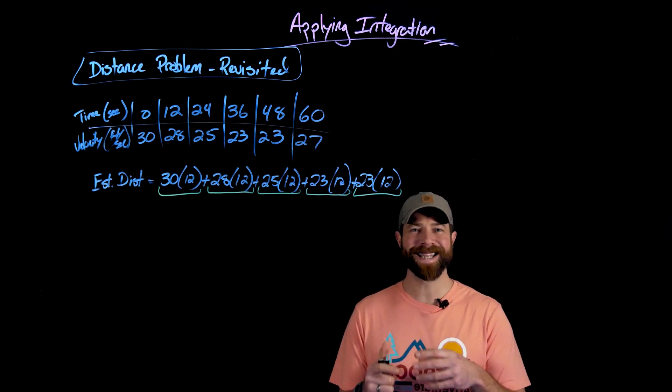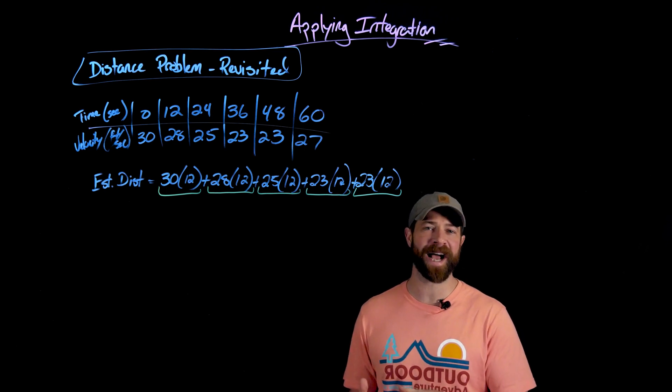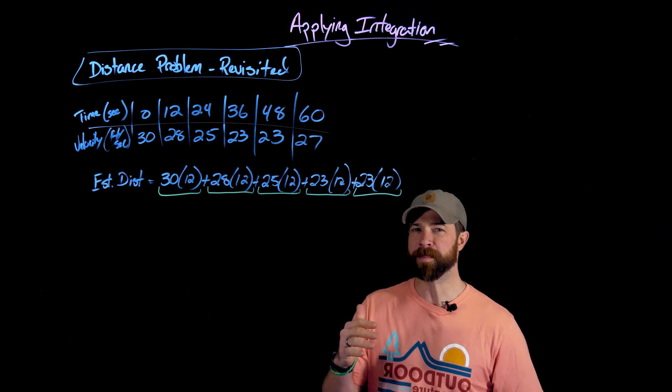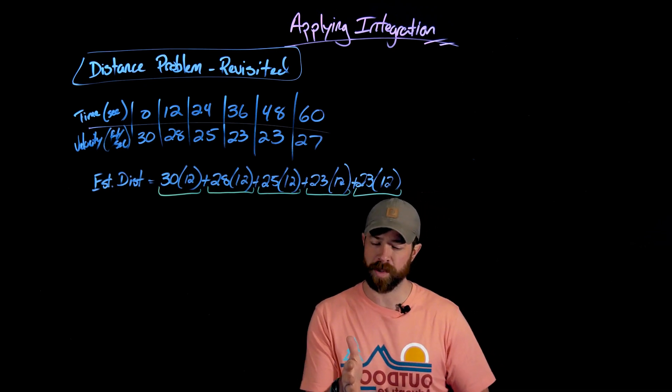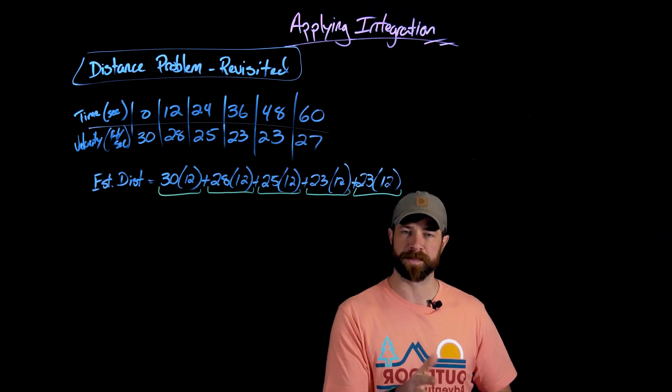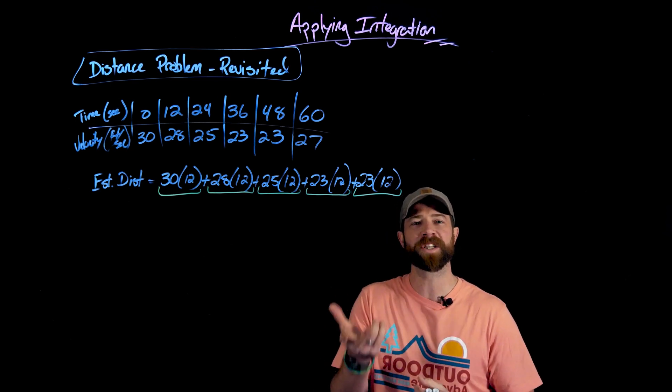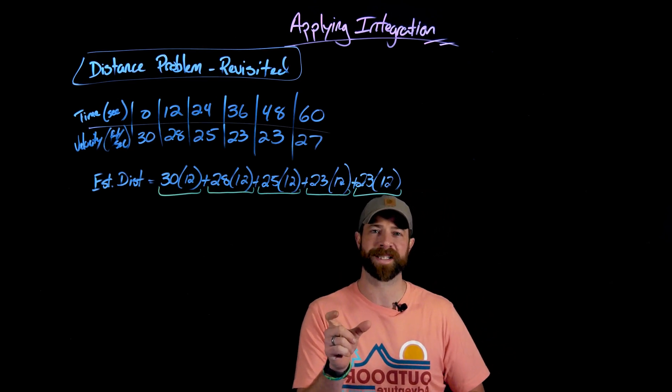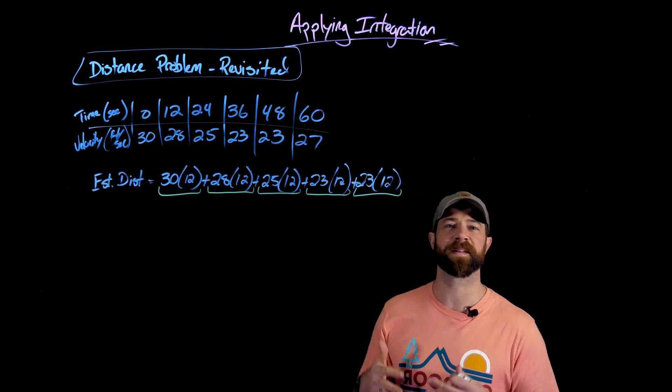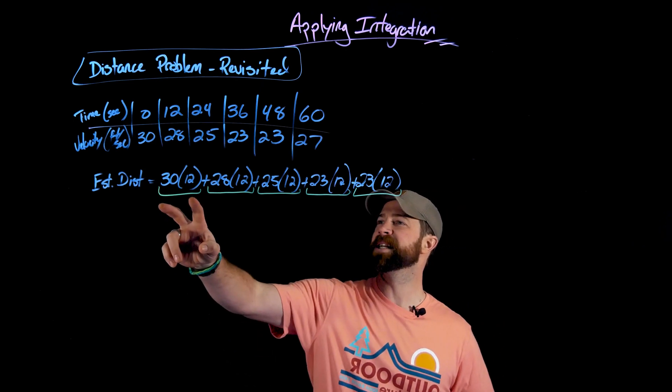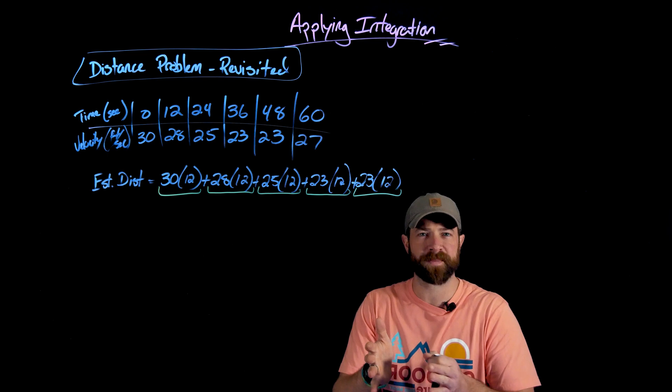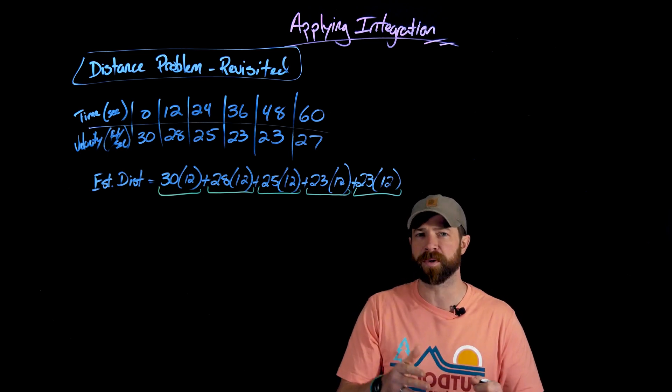In order to help you tie the idea of integration into how we can apply it in the real world, I wanna revisit this problem we had previously. If you remember, this was a context where we had a motorcycle where we're taking these 12-second intervals, we were reading the actual speedometer, and with that, we could get a general idea of the overall distance covered by this motorcycle. We have these readings, these are speeds translated into feet per second, and in each case, we could get an estimate for how far that motorcycle has traveled for every 12-second interval. In this case, what I'm showing you is a representation of using the beginning velocity time.